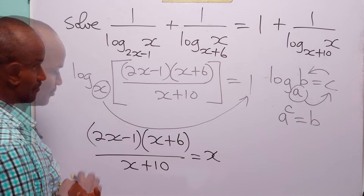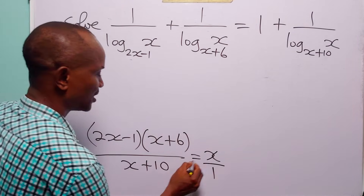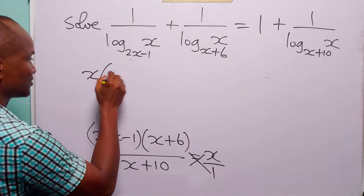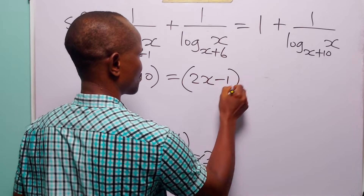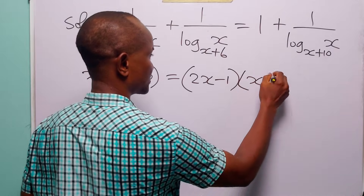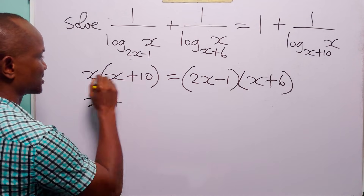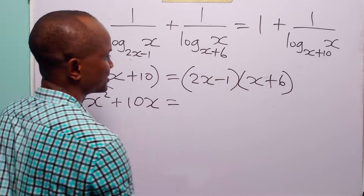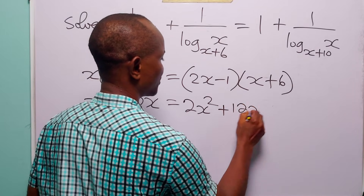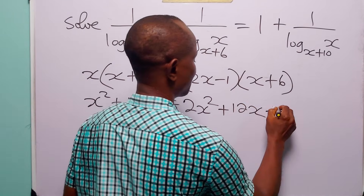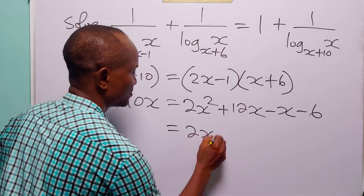The next thing we do is cross multiply to get rid of the fraction on the left hand side. So we have x times (x plus 10) equals (2x minus 1) multiplied by (x plus 6). On the left hand side we have x squared plus 10x, and on the right we have 2x squared plus 12x minus x minus 6.